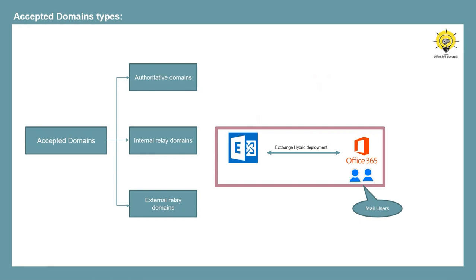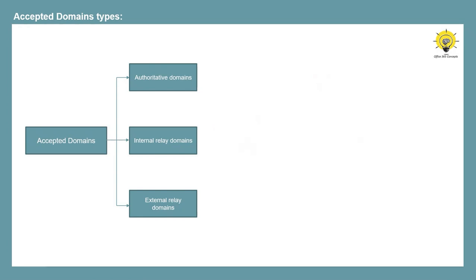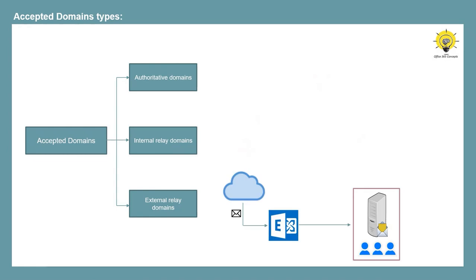The third type is external relay domain. This type is mostly used by ISPs, or when you are configuring Edge Transport servers on your internal Exchange organization. In external relay domain, Exchange Server receives the email for a domain but does not host any of the mailboxes — for example, your Exchange organization is the central location for accepting internet email for a group of separate organizations. Now let's move to our lab, and let me show you how to add additional domains in accepted domains and how to use that domain to send and receive emails.